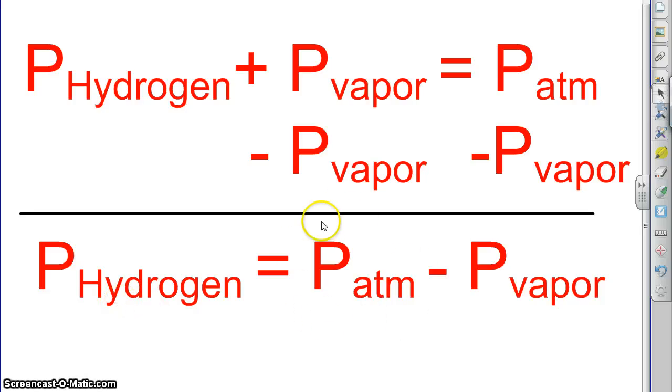So atmospheric pressure you would get off of a barometer. This you would need to find off of a table of some sort. And I can help you do that if necessary. But remember any time you collect a sample over water you're going to have to do this. Take the atmospheric pressure in the room. Subtract off the water vapor pressure of that temperature. And that's the actual pressure of your sample.